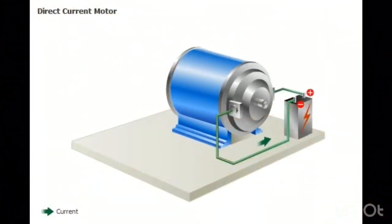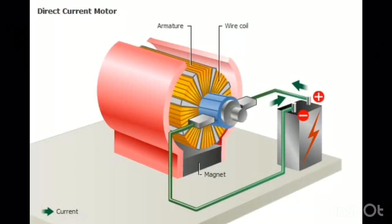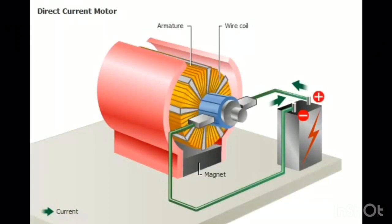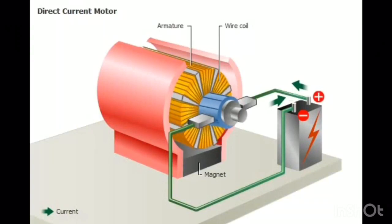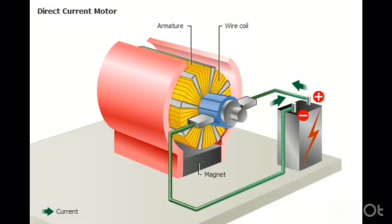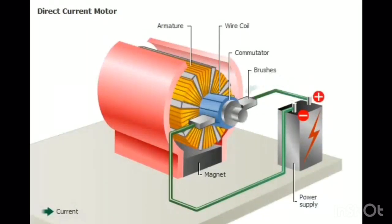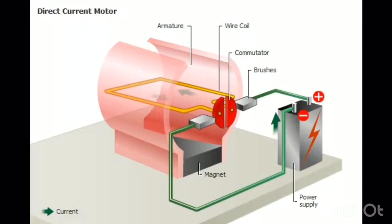An electric motor converts electrical energy into mechanical energy. A DC motor uses direct current electricity that flows continuously in only one direction around a circuit. A DC motor consists of an armature that rotates within a magnetic field. The armature has a coil of wire wrapped around an iron core. A source of electricity is connected to brushes, which make contact with the commutator on the armature.